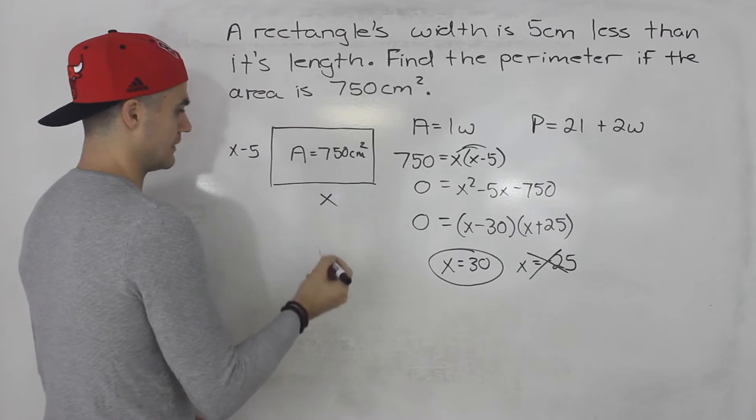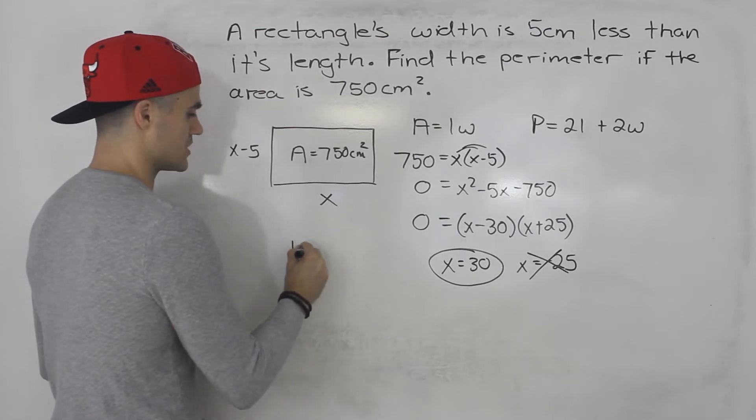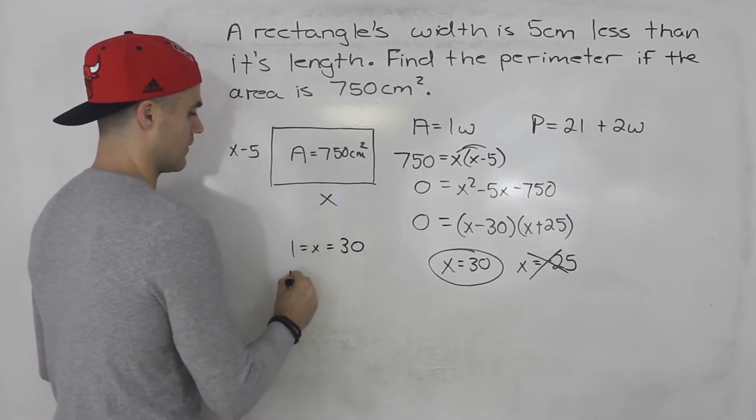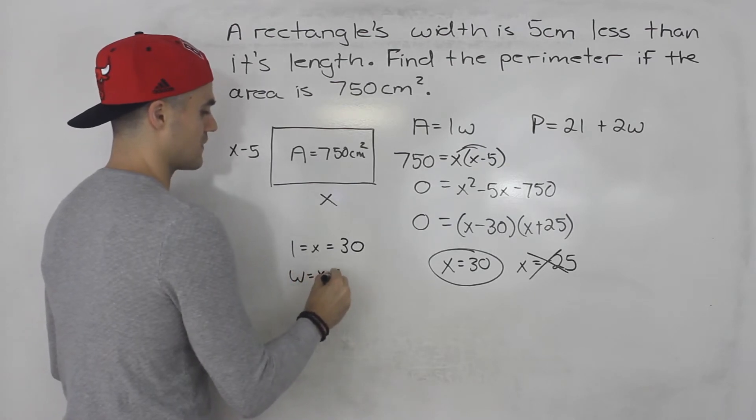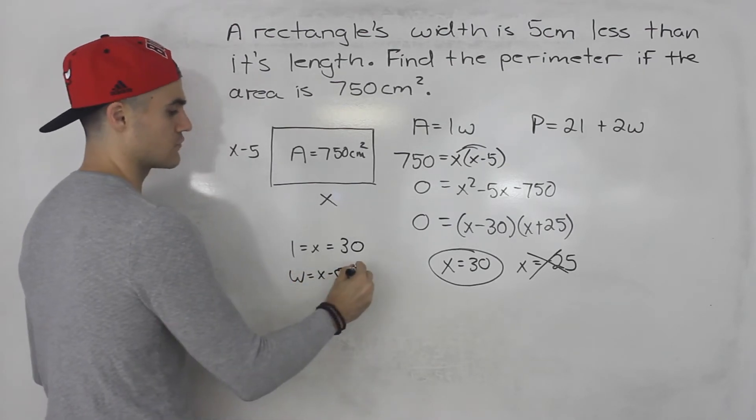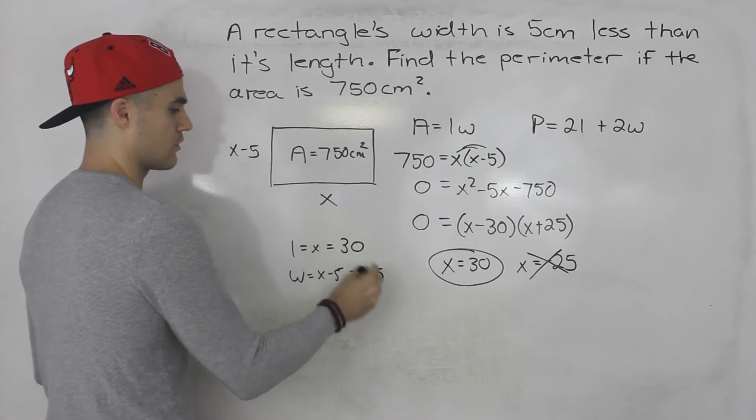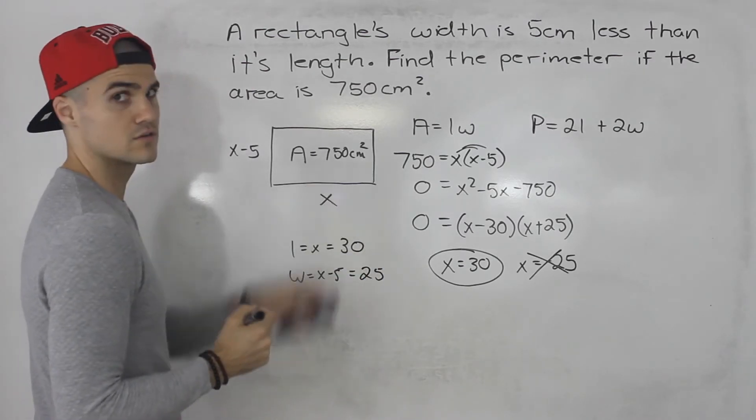So the length, which is equal to x, is equal to 30, and the width, which is equal to x minus 5, is 30 minus 5, which is 25. And 30 times 25 gives you 750.